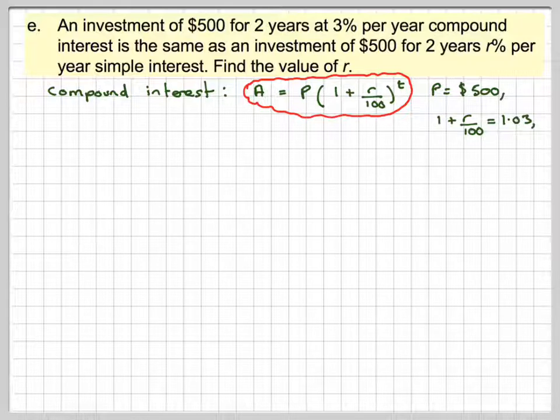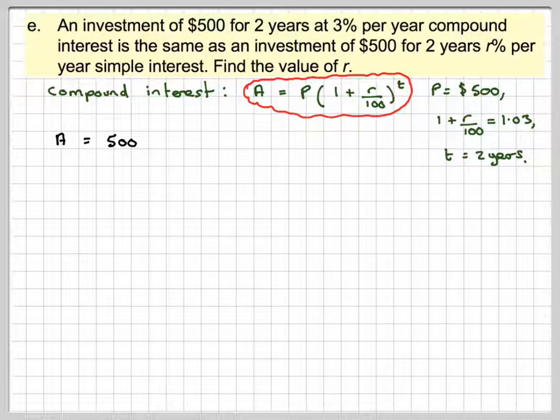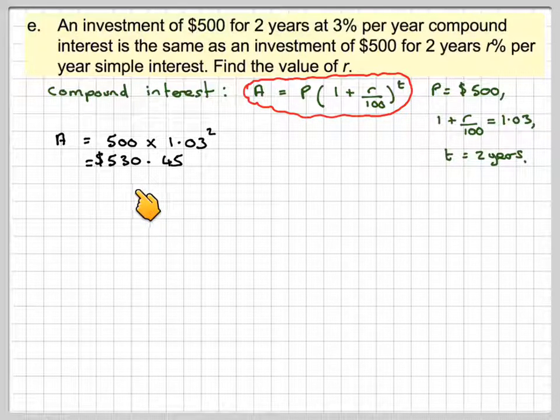P is 500. 1 plus R is the multiplier for 3%, 1.03, and T is 2 years. So A will be 500 times 1.03 to the power of 2, which gives me $530.45, correct to the nearest cent.